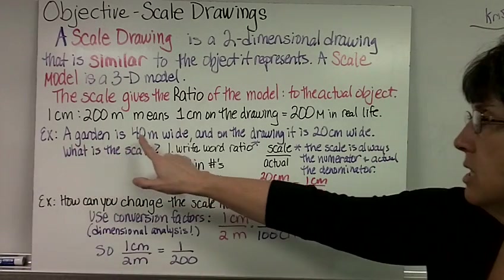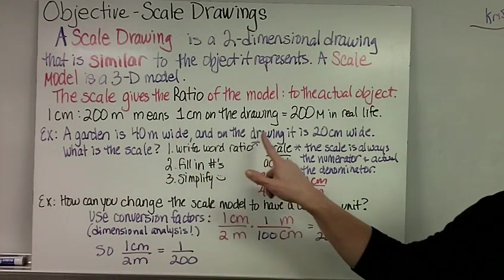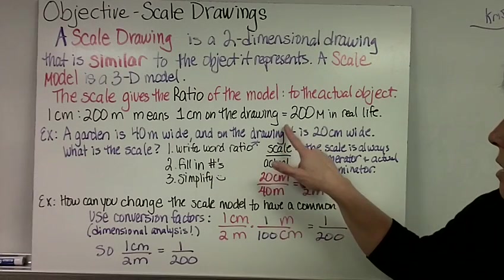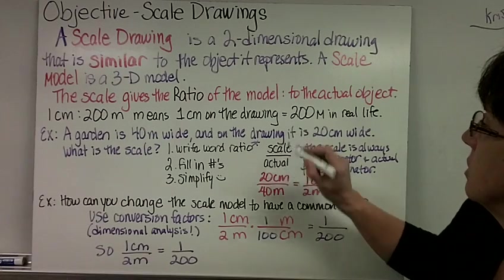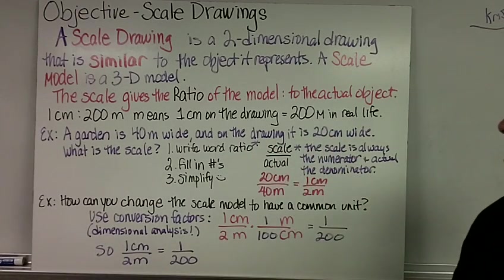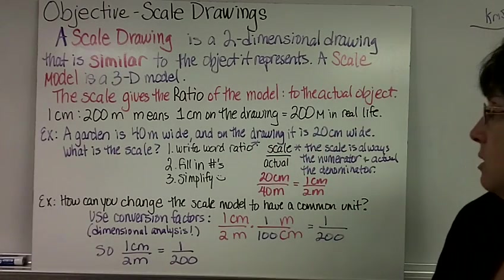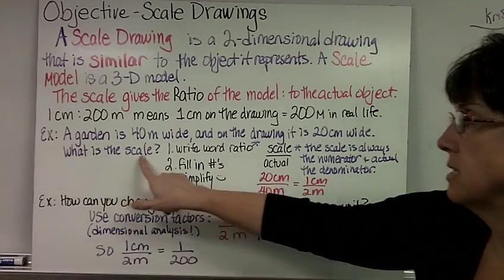Here's an example. A garden is 40 meters wide and on the drawing it is 20 centimeters wide. What is the scale?